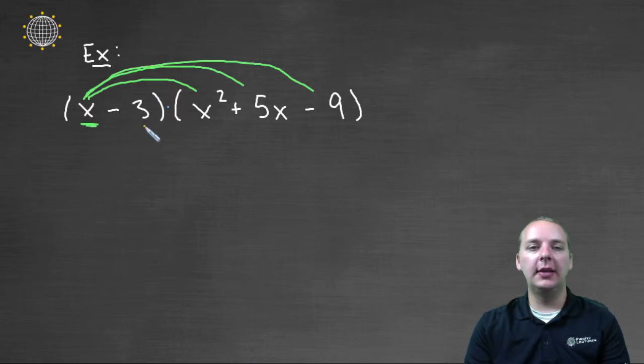then we'll take the negative three and multiply it times the x squared, the five x, and the minus nine. So let's do that.